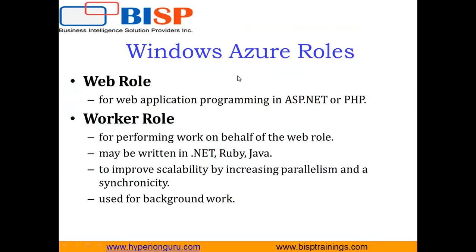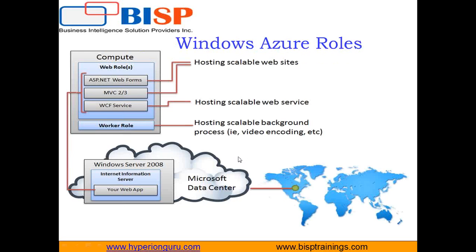Now we come to Windows Azure roles. A web role is for web application programming in ASP.NET or PHP. A worker role performs work on behalf of the web role — it is used to improve scalability by increasing parallelism and asynchronicity, and it is used for background work. You can think of compute as being a container for web roles and worker roles. This compute enables us to run application code in the cloud and quickly scale our applications.